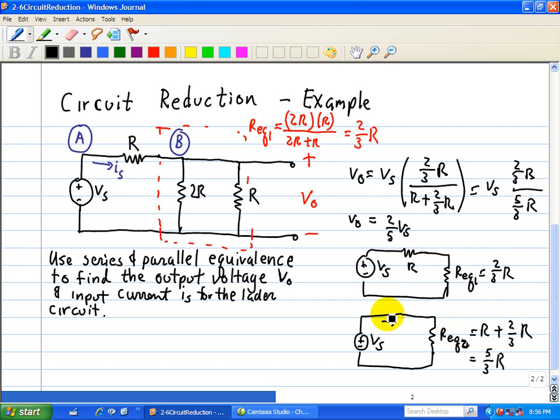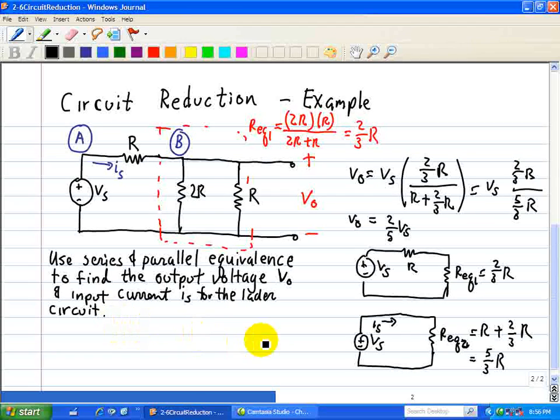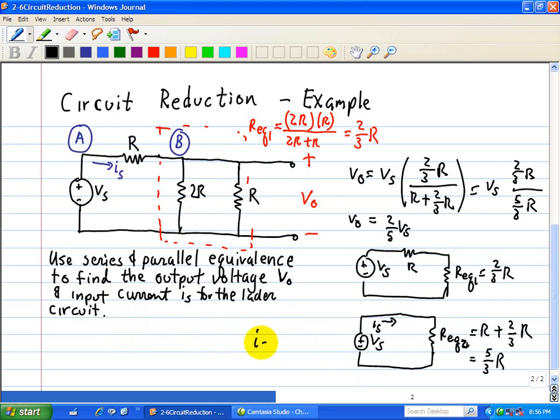And then when we want to find IS, IS therefore results in, IS using Ohm's Law, is the voltage of the source divided by the equivalence, five-thirds R, which is equal to three-fifths Vs divided by R.